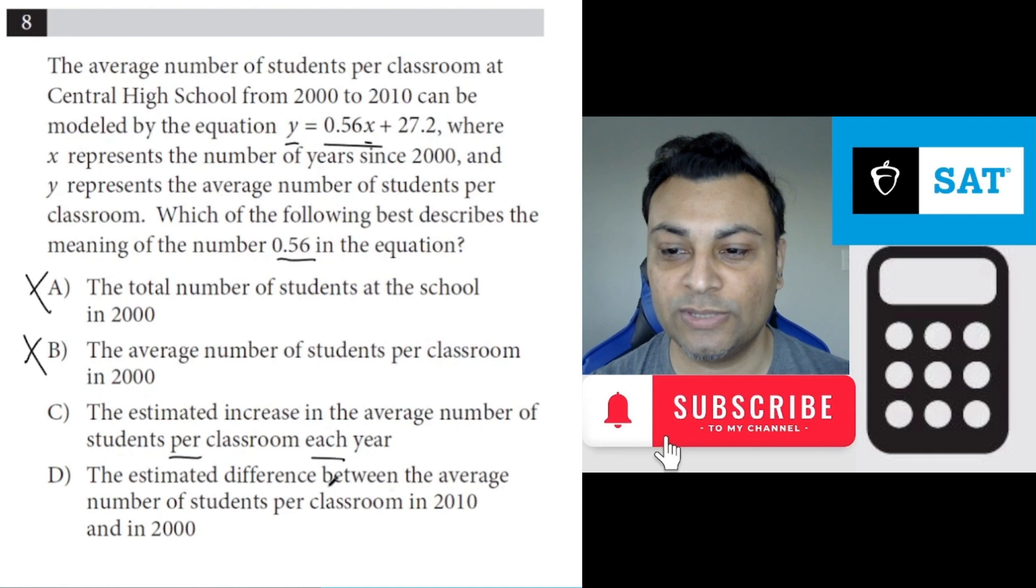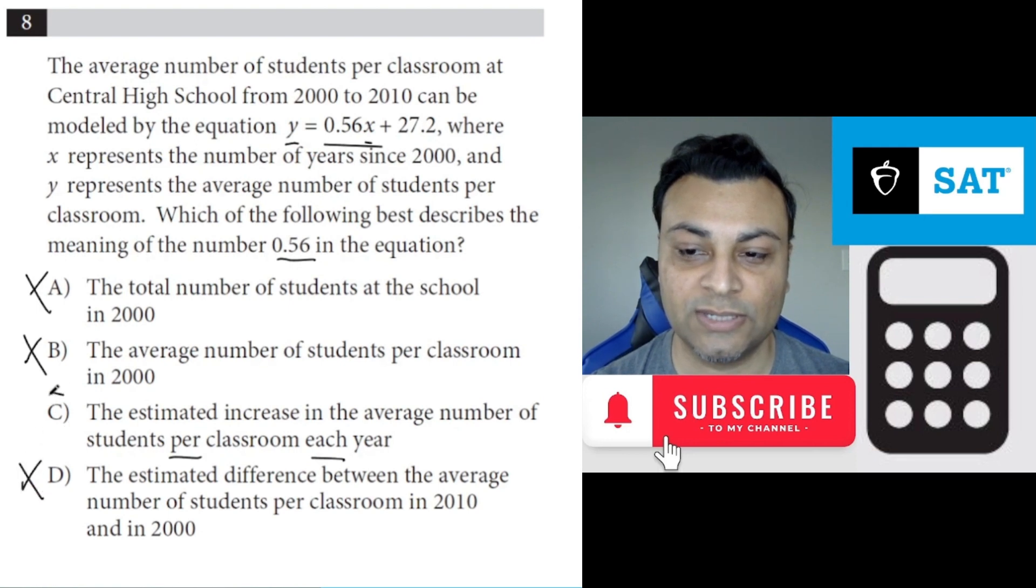The estimated difference between the average number of students per classroom in 2010 and 2000 - that's not the meaning of slope either. So the answer is C.